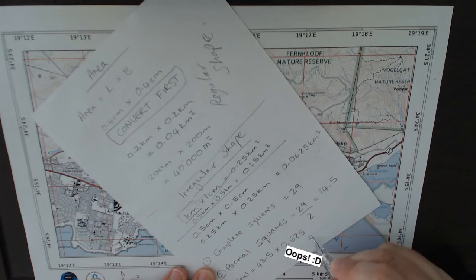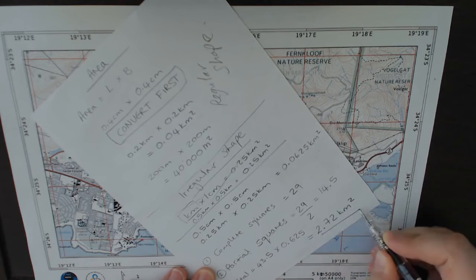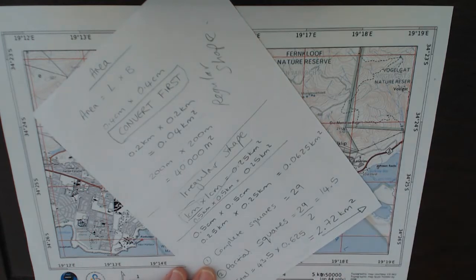That is how we calculate the area of both regular and irregular shapes or features on a map. Any questions, comment below. Like, share, subscribe. See you soon.